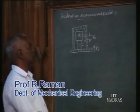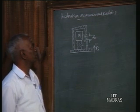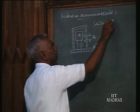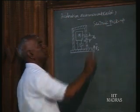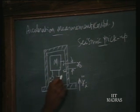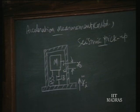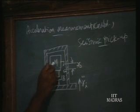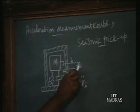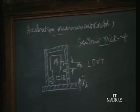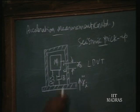Now, we have seen the theory of operation of an accelerometer — that is, a seismic pickup used as an accelerometer. In this, the main construction is a mass supported by a spring with spring constant K_s and a damper with damping coefficient b. By measuring x_o, the relative displacement of the mass with reference to the frame of the instrument, using an LVDT or any other displacement measuring instrument, and calibrating that reading in terms of input acceleration — that is what we derived from the theory.